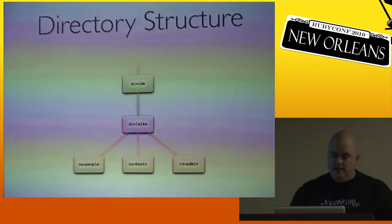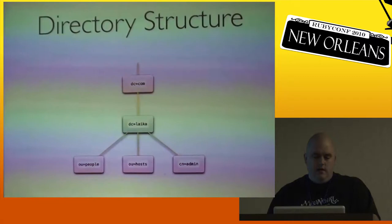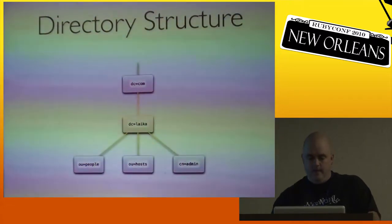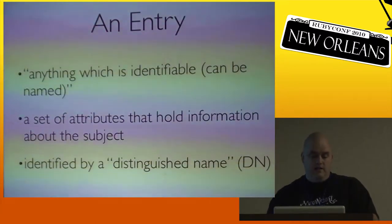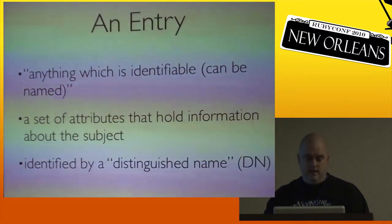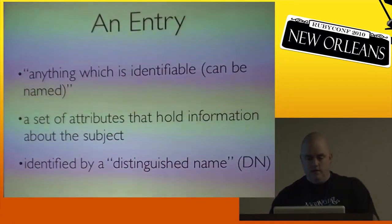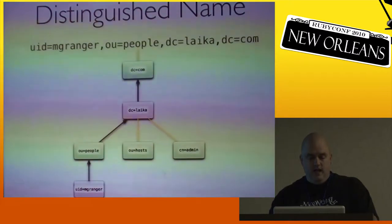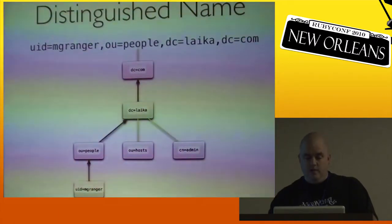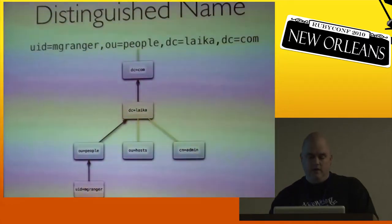The directory is structured as a set of entities organized into a hierarchy. Superior and subordinate relationships between entries express relationships between them. In the RFC, an entry is described as information about an object which is identifiable or can be named. It's composed of a set of attributes about the subject and is identified by a distinguished name, or DN. The DN is made up of one or more relative distinguished names, or RDNs, that describe the path from the entry back up to the root of the hierarchy. Each RDN is unique amongst its siblings, and an entry's parent can be found by removing the first RDN of its DN.